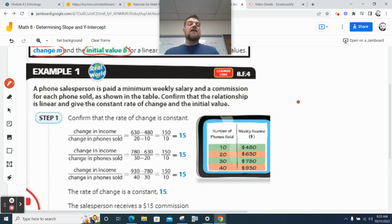Let's move on. Example number one, it says a phone salesperson is paid a minimum weekly salary and commission for each phone sold as shown in the table. Confirm that the relationship is linear and give a constant rate of change and the initial value. Okay? Do you have a question?